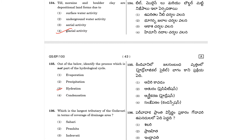Question 136: Which is the largest tributary of the Godavari in terms of coverage of drainage area? Godavari's largest tributary is Pranahitha.